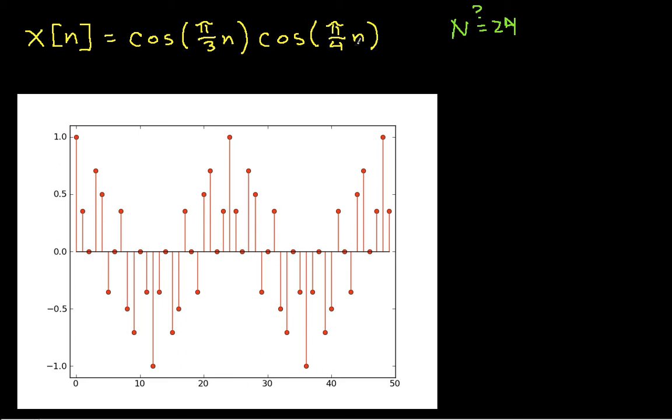And so if I take x[n+24] and plug in n+24 here and here, what you'll find is I'll have π/3*n, and then I get 24 times π/3, which gives me 8π. So that 8π is a multiple of 2π, so that goes away. And here, I'll have π/4*n plus 6π. Again, the 6π is a multiple of 2π, and it goes away. So it turns out that this one is periodic with fundamental period 24. Again, you can see from the graph that it doesn't look like it's repeating any time before that.